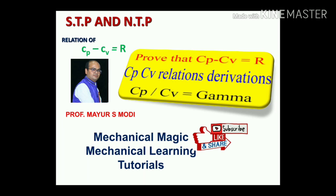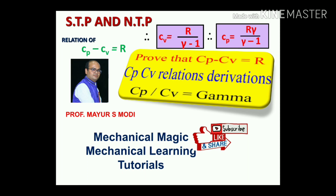Welcome to my YouTube channel Mechanical Magic - Mechanical Learning Tutorials. Today we will be discussing STP and NTP, that is standard temperature and pressure conditions and normal temperature and pressure conditions, and also the relations of Cp and Cv equal to R, and finally Cp by Cv equal to gamma.